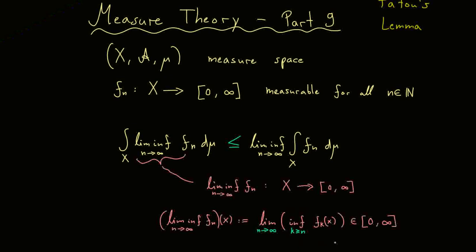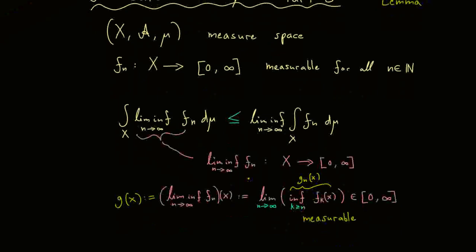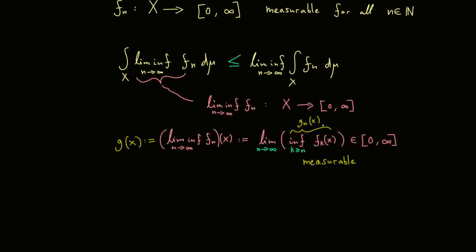The beauty of this is that we know that the limit inferior is also measurable. Simply because you can easily show that if you put in measurable functions, infima are measurable, and also limits of measurable functions are also measurable. For the whole proof now, it makes sense to use some abbreviations here. Let's call the limit inferior just by g of x, so we have a function g now, and also these functions here, given by the infima, let's call them gn of x. And of course, all the functions here are measurable. And we get another information out here. These functions here are now monotonically increasing.